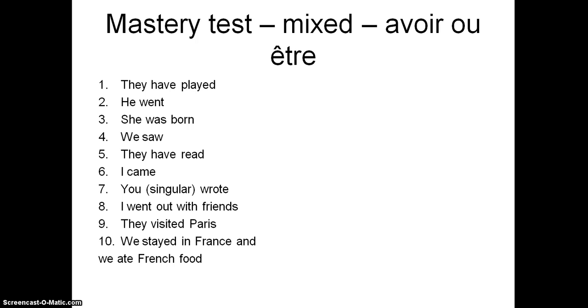Let's go through the answers then. The first one. Ils ou elles ont joué. Takes avoir. Jouer. Went. Aller. Takes être. Doesn't need an extra e on the end of this because it's not a girl. But it does take être. Born. Another être verb. Does need an extra e on the end here because it's a girl. We saw. Nous avons vu. Voir. Takes avoir.